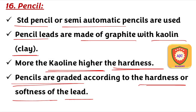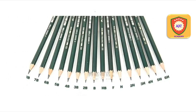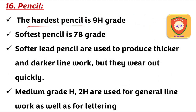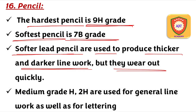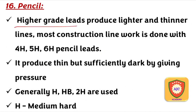Pencil grade is determined by hardness and softness — B grade and H grade. The hardest pencil is 9H grade, and the softest is 7B grade. Soft pencils produce thick, dark line work and wear out faster. Medium grades include H and 2H.